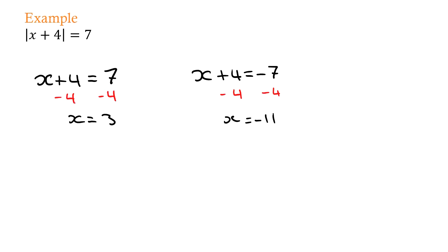So the solutions are x equals 3 and x equals negative 11. So you show both first, x plus 4 equals 7 and then x plus 4 equals negative 7, and solve them as you would any other regular equation.